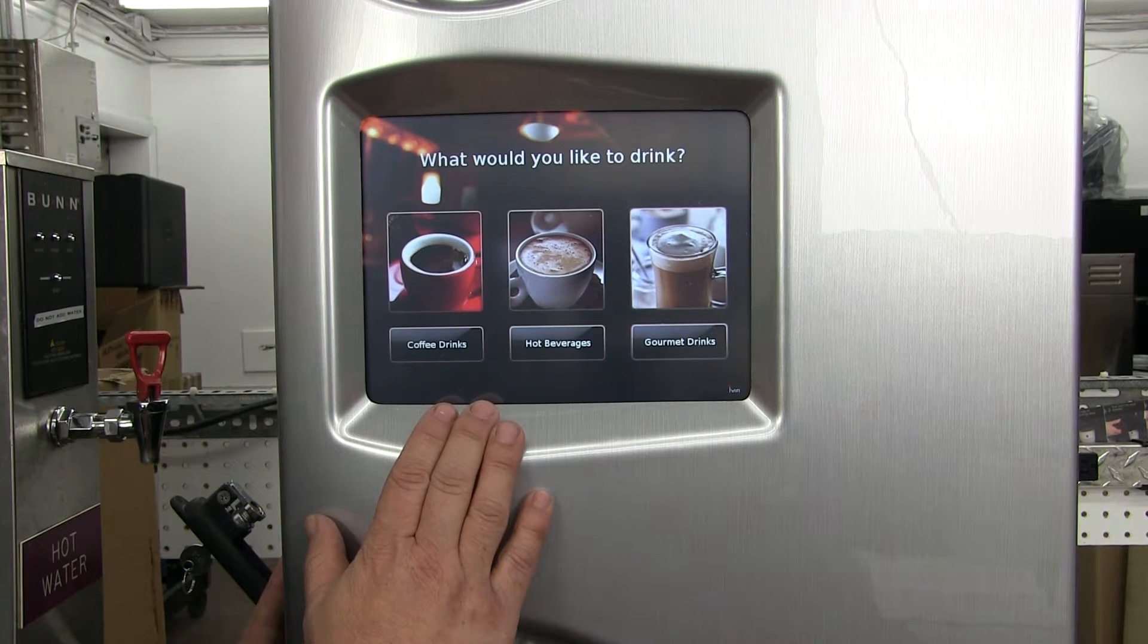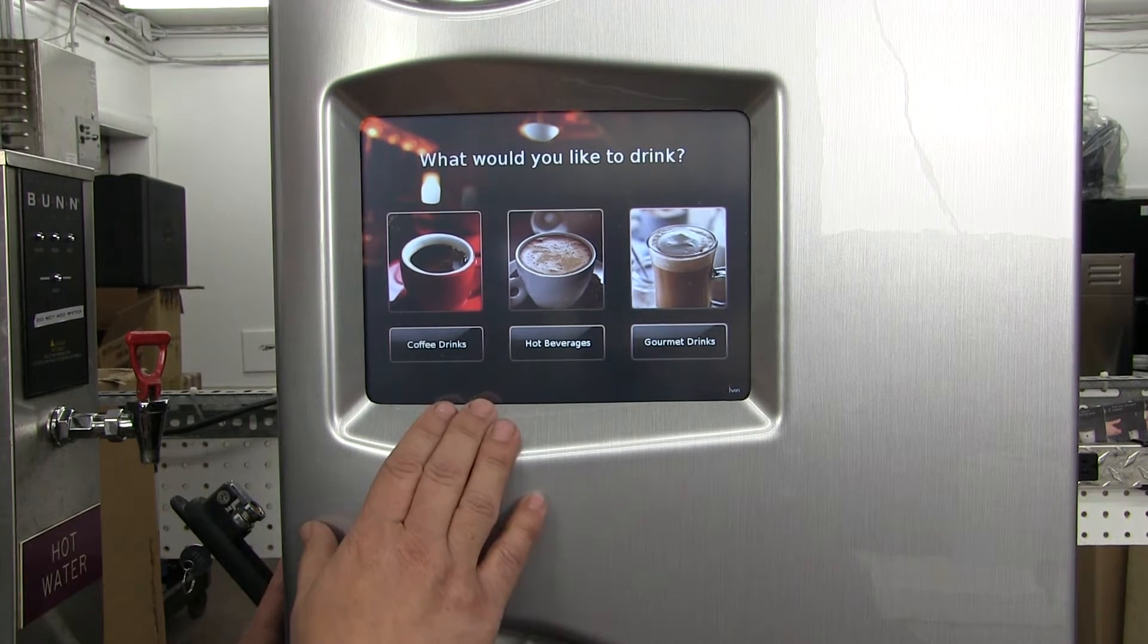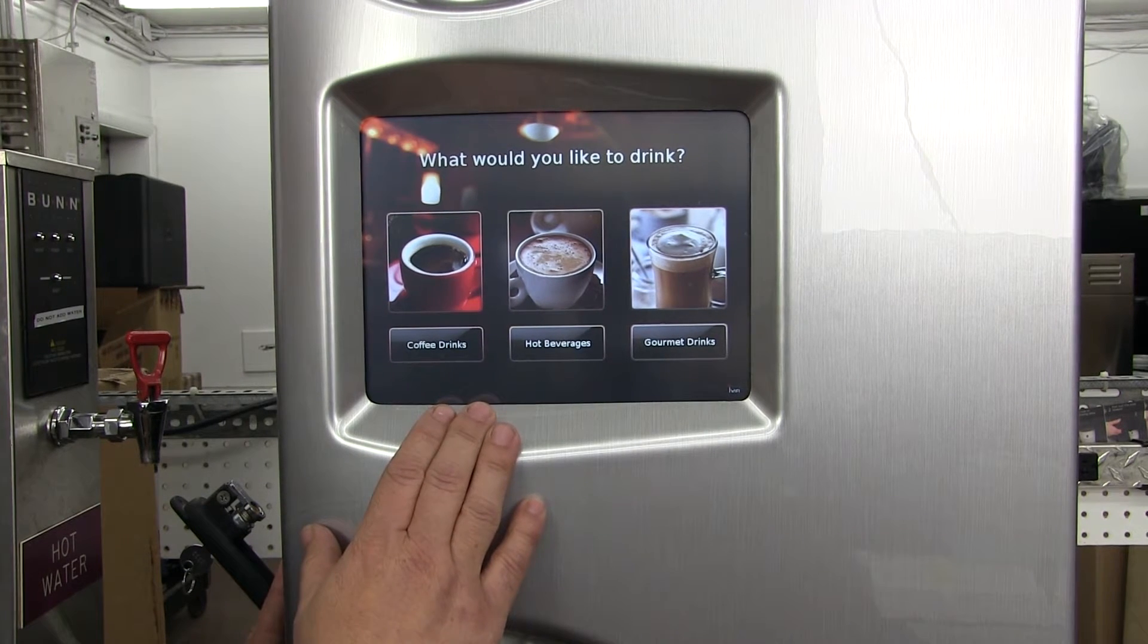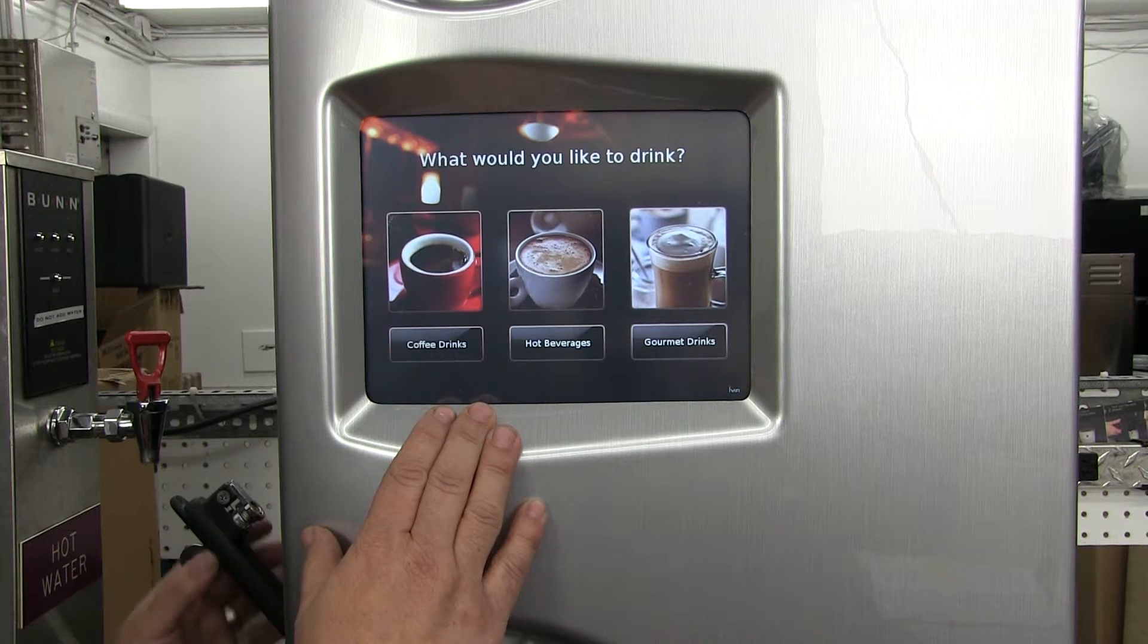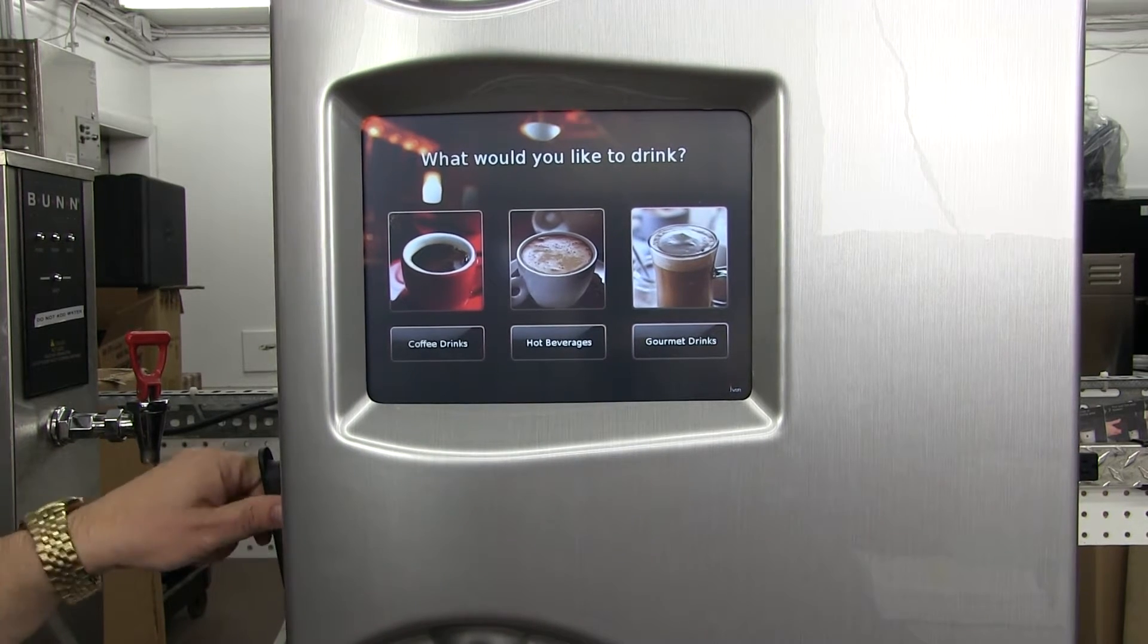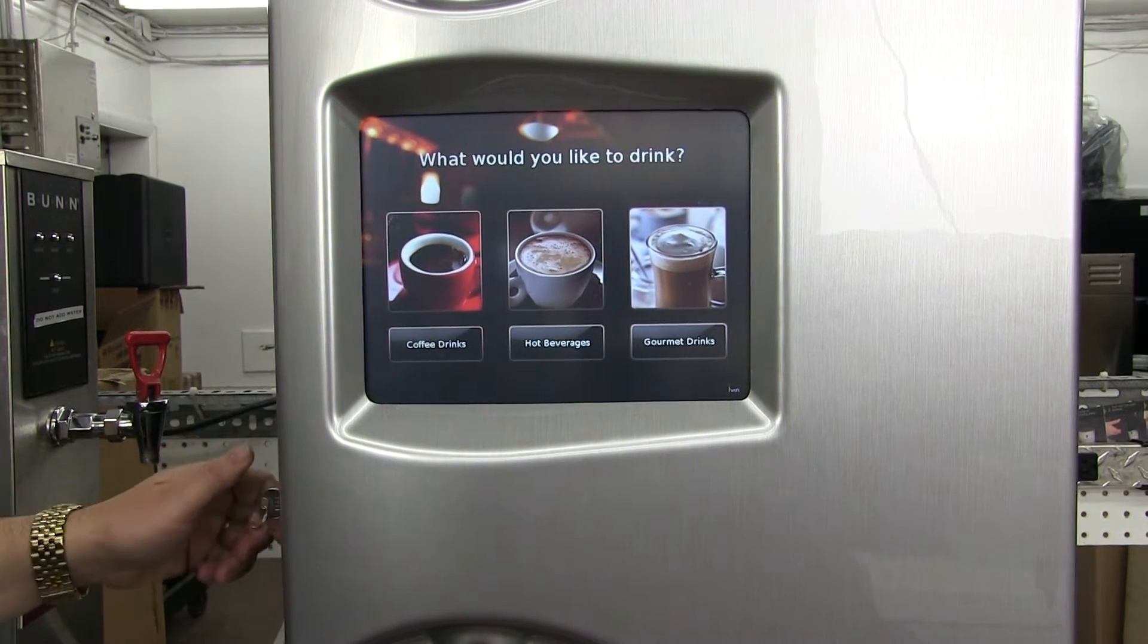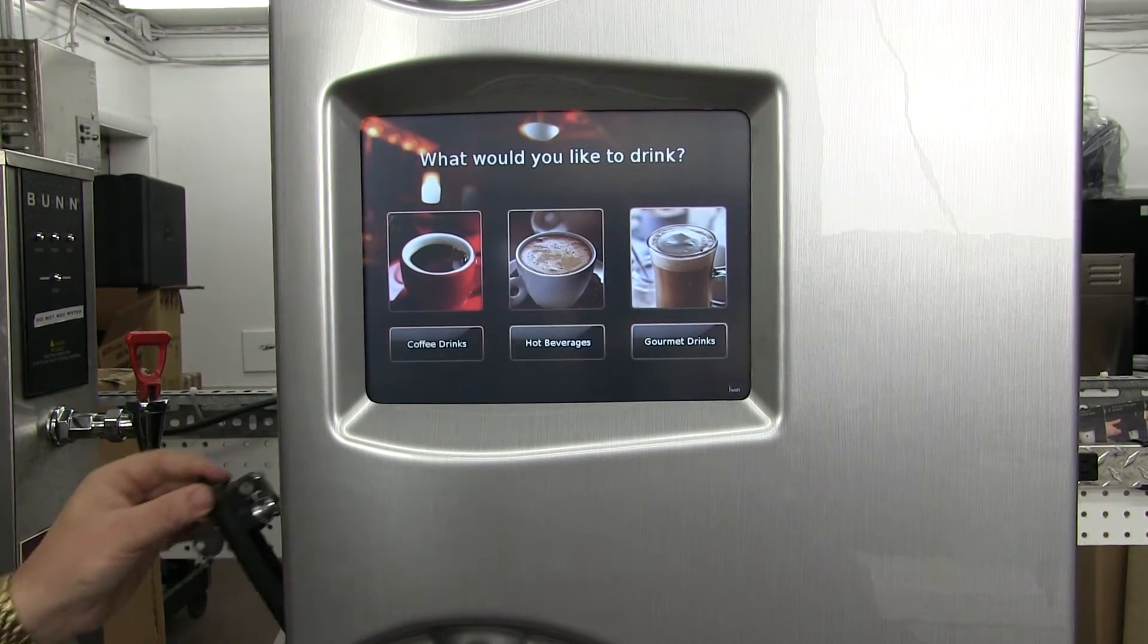Here we are at the front of our machine and what we want to do is we're going to change the paper. So we're going to open the door of our machine by turning the key and pulling the handle down.